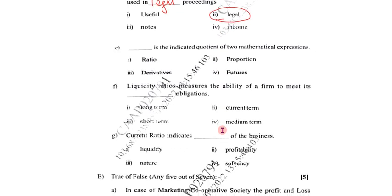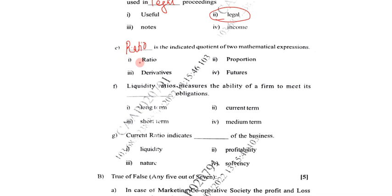Question number 4: Dash indicates the relationship of two mathematical expressions. Options are ratio, proportion, or derivative. Ratio is the correct answer.